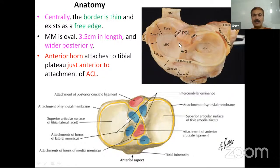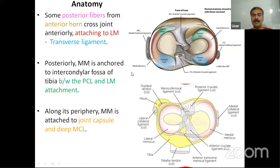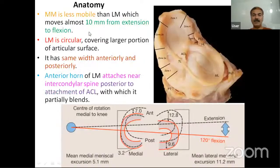The length of the medial meniscus is around 3.5 centimeters. The anterior horn of the medial meniscus attaches to the tibial plateau just anterior to the ACL attachment. Some posterior fibers traverse and cross the joint to attach to the lateral meniscus — this is called the transverse ligament. Posteriorly, the medial meniscus is anchored in the intercondylar fossa between the PCL and lateral meniscus attachment. Along its periphery, it attaches to the joint capsule and deep MCL. The medial meniscus is less mobile, while the lateral meniscus is more mobile with almost 10-11 millimeters of excursion; medial excursion averages around 5 millimeters.